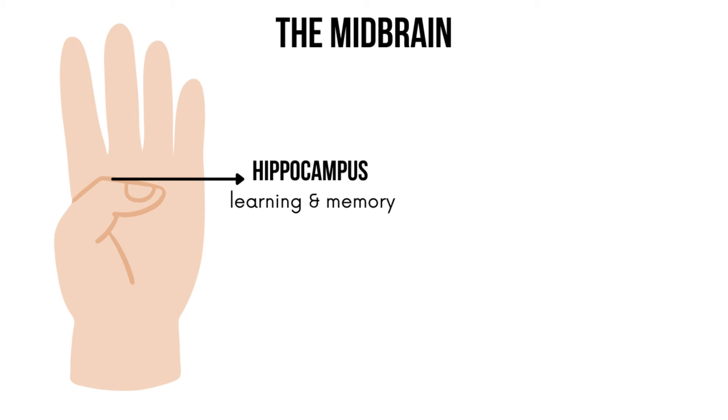Now let's move on to the second part of the brain: the midbrain, or the limbic brain. Your thumb represents the center of your brain, which starts developing when your child is one or two years old. There are two important parts in your midbrain. The first is the hippocampus, represented by the first knuckle, and it's mainly responsible for learning and memory.